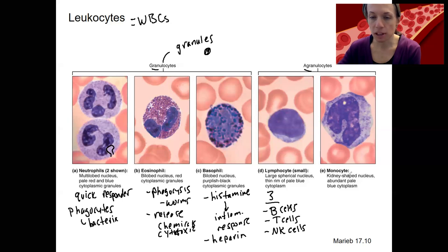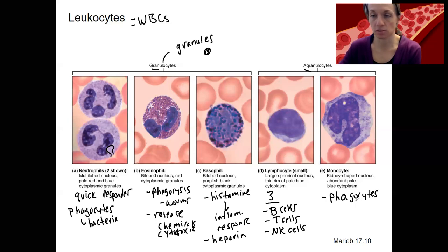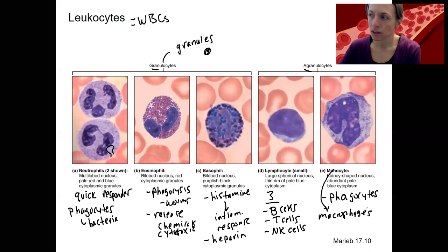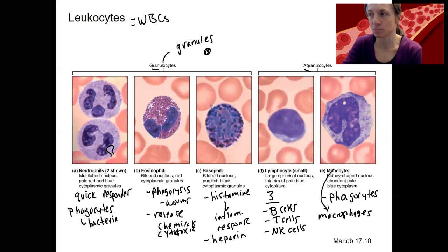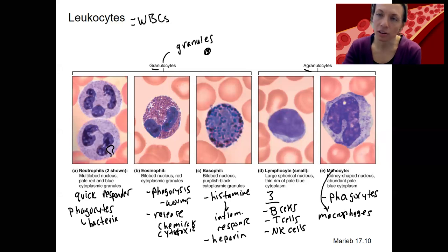Lastly, monocytes. These are big phagocytes that ingest foreign material, debris floating around, old cells like red blood cells that are done with their life, and other damaged cells. When monocytes enter other tissues, they get different names — the one you'll see most often is macrophages. Macrophages are monocytes that have left circulation and ingest things outside of the blood circulation itself. Macrophages and other white blood cells also release chemicals to attract other white blood cells and to kill cells as well.